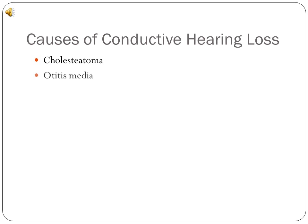Otitis media is an inflammation of the middle ear and the most common cause of hearing impairment in children. In otitis media, the inflammation often begins when infections that cause sore throats, colds, or pulmonary symptoms spread to the middle ear.